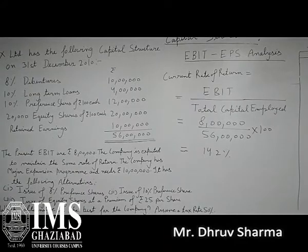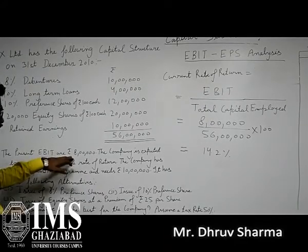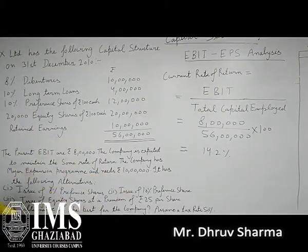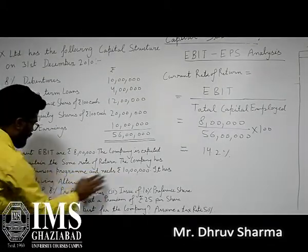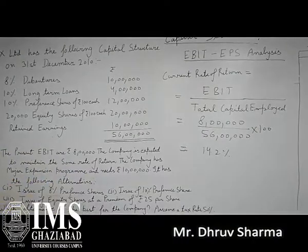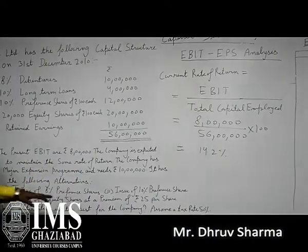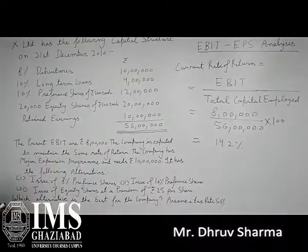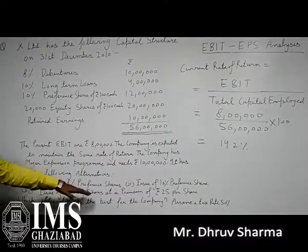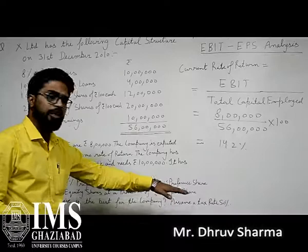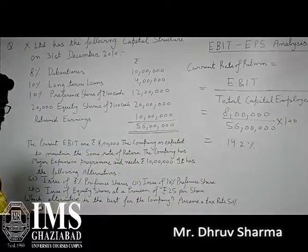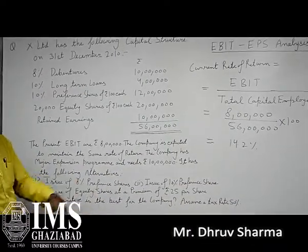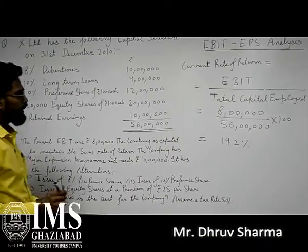The company wants to expand their business and needs rupees 10 lakh. The company has the following alternatives: either issue 8% debentures, or issue 10% preference shares, or issue equity shares at a premium of rupees 25 per share. We need to determine which alternative is best for the company, assuming a tax rate of 50%.